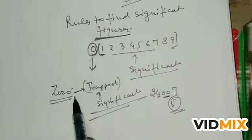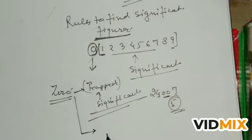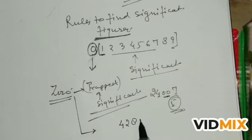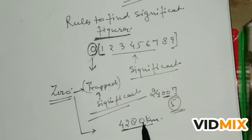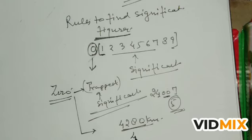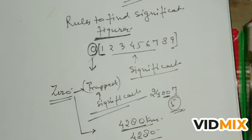The second rule: if the zero is at the last of the number — for example, 4280 — if this is a measurement, such as 4280 kilometers distance between two cities, then this trailing zero is significant. Otherwise, if it is just the number 4280 with no unit, then only 1, 2, 3 digits are significant figures — the trailing zero is not counted.